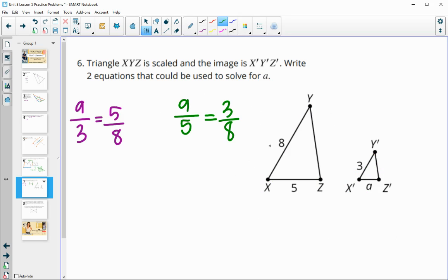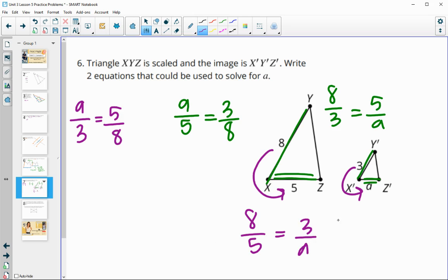And there's a bunch of other ones you could write, so this is not the only ones. You could do like eight over three, so I went eight over three, so now I'm going to go five over A. You could have gone eight to five, so eight compared to five, and then three to A. So there are a lot of other equations. That's just a few examples.